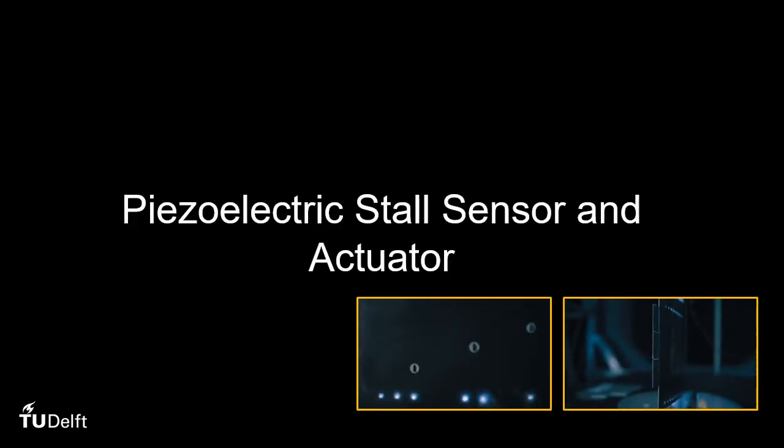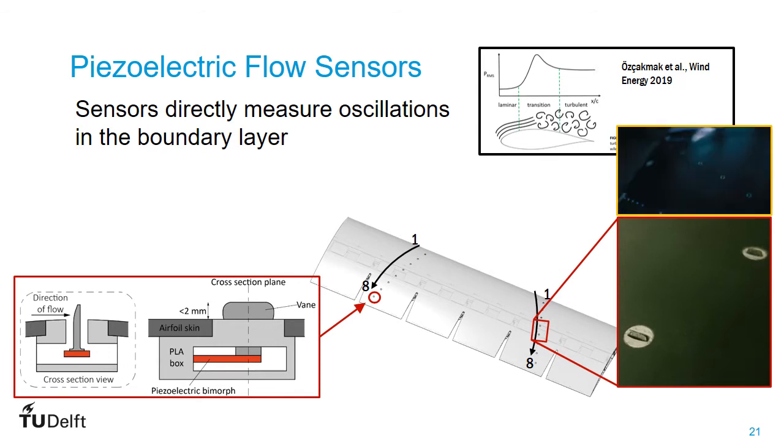The wing also contains newly developed piezoelectric stall sensors and actuators. The piezoelectric flow sensors themselves are composed of small piezoelectric biomorphs located under the skin of the airfoil. As you can see in the figure on the left, the tip of these biomorphs is attached to a vein piercing the skin, which will probe the boundary layer. The idea is that they will detect oscillations occurring in the boundary layer, of which the amplitude should peak near the laminar to turbulent transition. As was already shown in the other research shown in the top right.